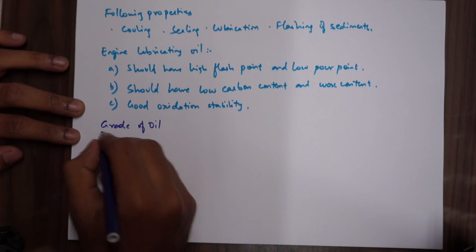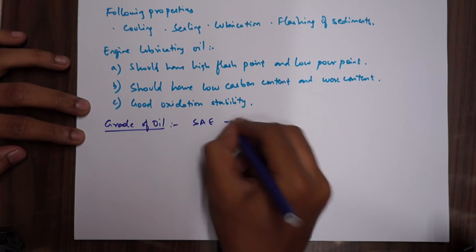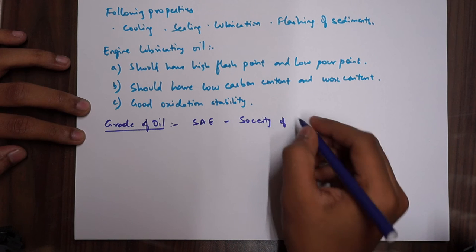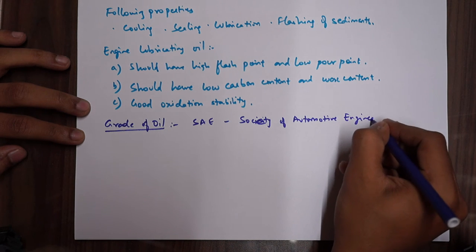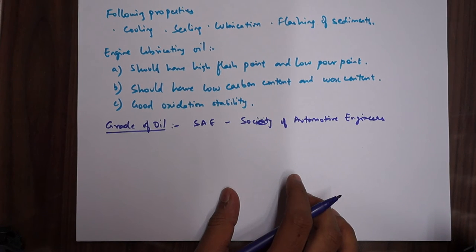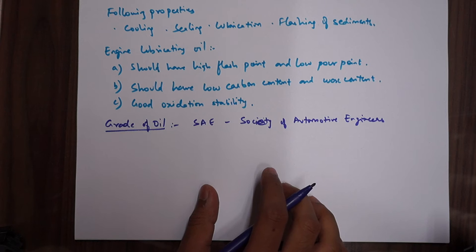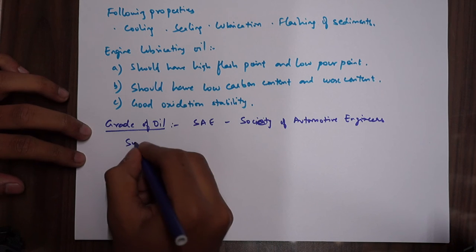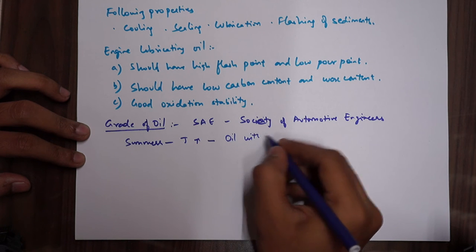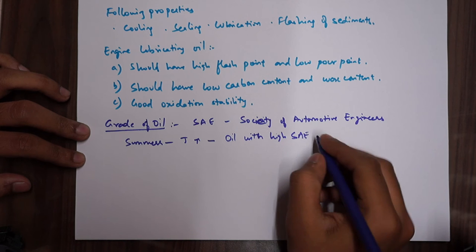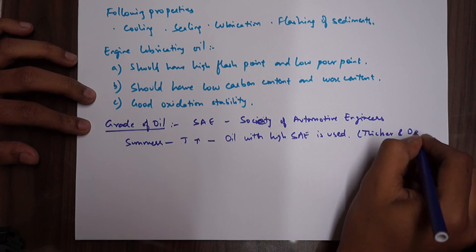Grade of oil is decided by a number designated as SAE - Society of Automotive Engineers. These guys are an international council which decide the grading of a particular oil. Each aircraft, each engine have a specific requirement of this SAE grade. In summers, temperatures are high therefore oil with high SAE number is used because it is thicker and denser.